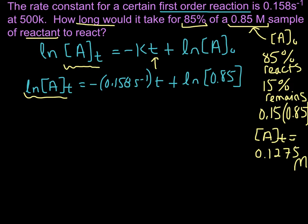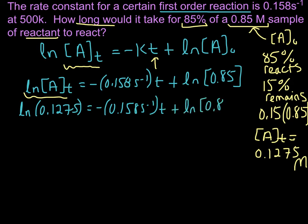Let's put that in as well. Filling in everything into our equation, we have the natural log of 0.1275 equals negative 0.158 seconds inverse times time plus natural log of 0.85.